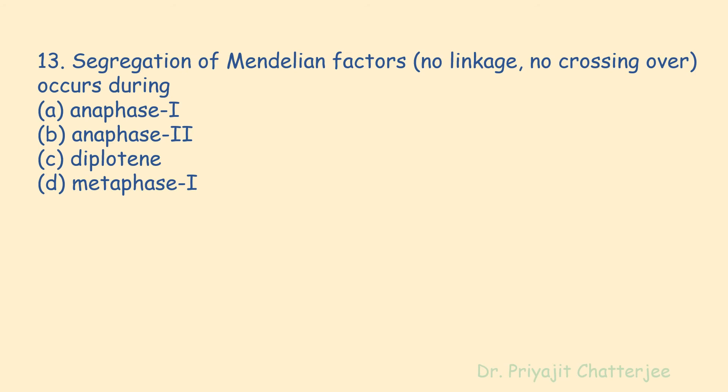The next question: segregation of Mendelian factors when no linkage and no crossing over occurs during which stage? Options are anaphase I, anaphase II, diplotene, and metaphase I. The correct answer is anaphase I. In a living organism the two alleles controlling each character maintain their identity, but during gamete or spore formation by meiotic cell division they move apart due to separation of homologous chromosomes. Each gamete receives only one allele — this is the law of segregation, occurring during anaphase I.